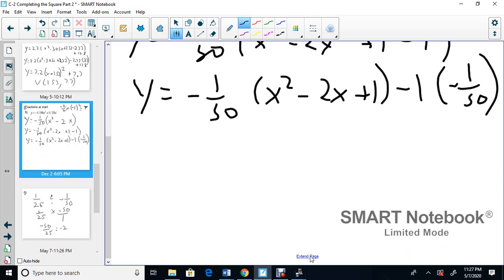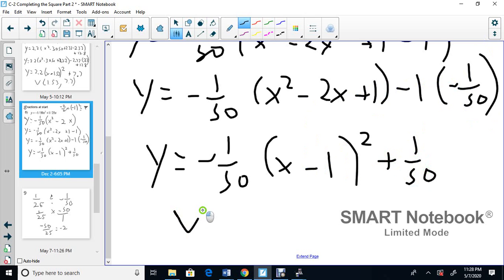So y equals negative 1 over 50 in the bracket. So it's x minus 1 squared. You take the middle term divided by 2, or you square root that, sign of the middle. Now, negative 1 times negative 1/50, well, that becomes positive 1/50. My vertex, 1 comma 1 over 50. Next question.